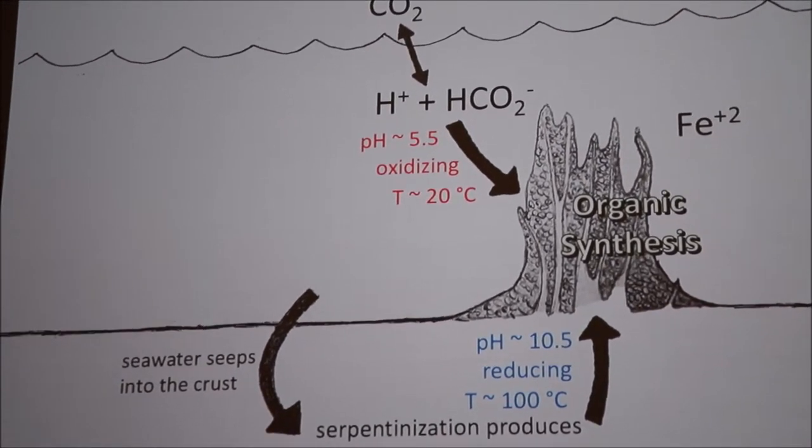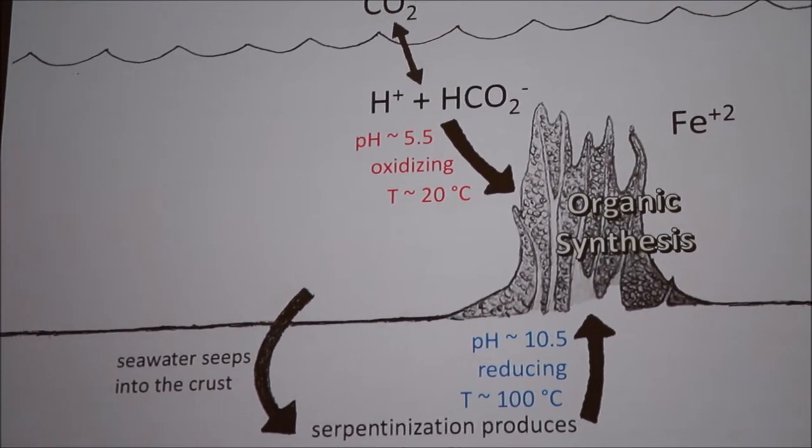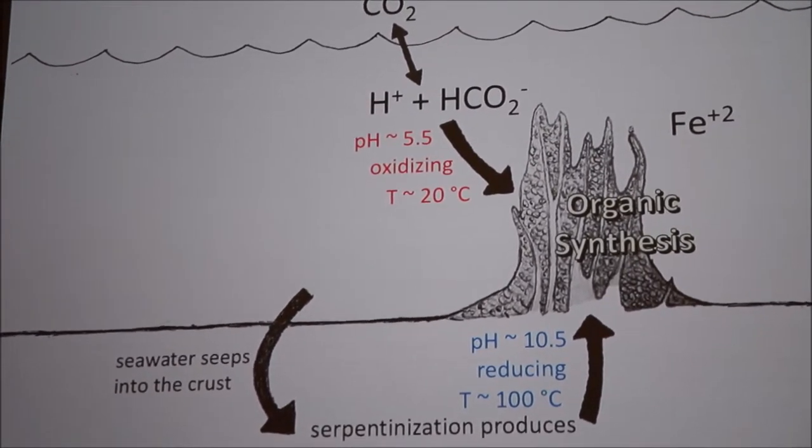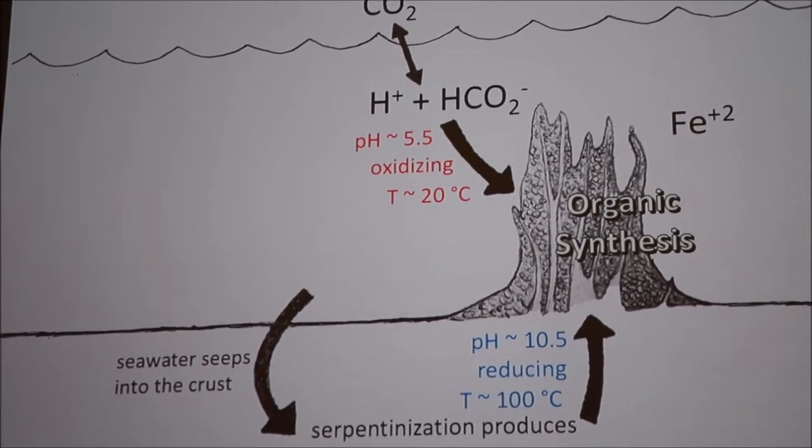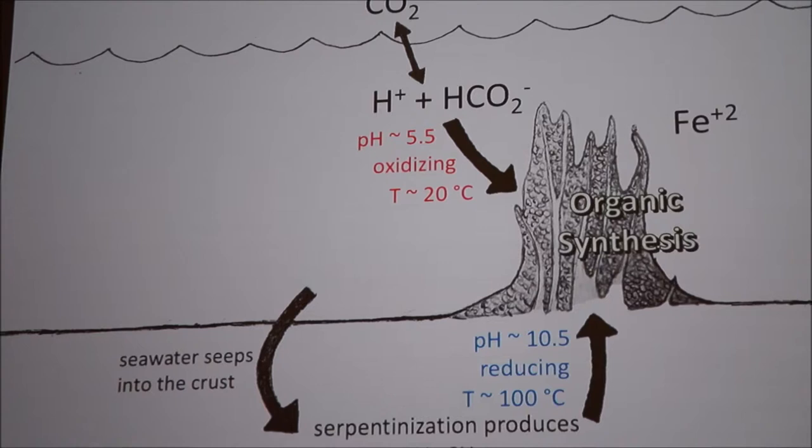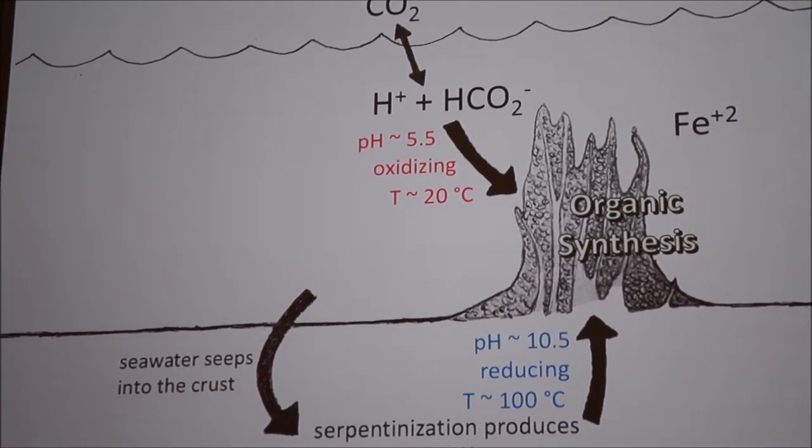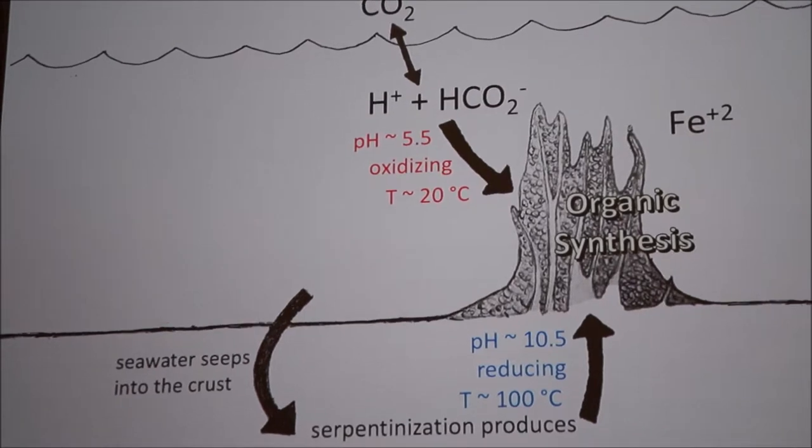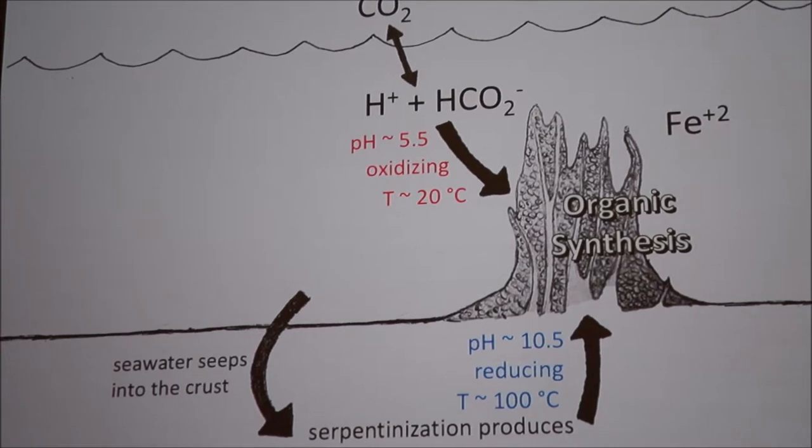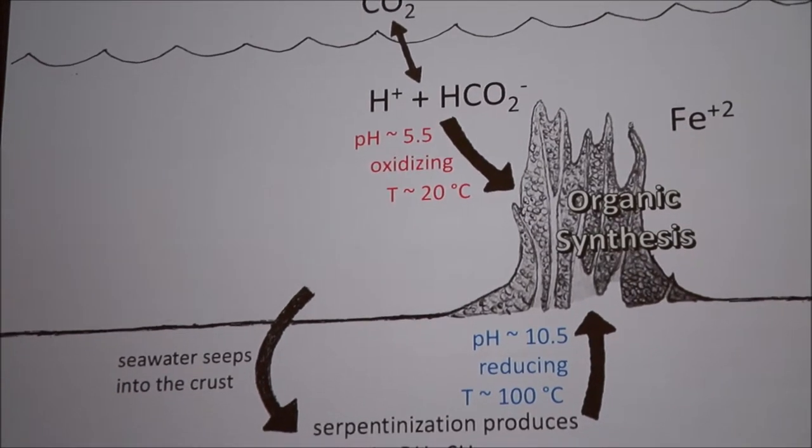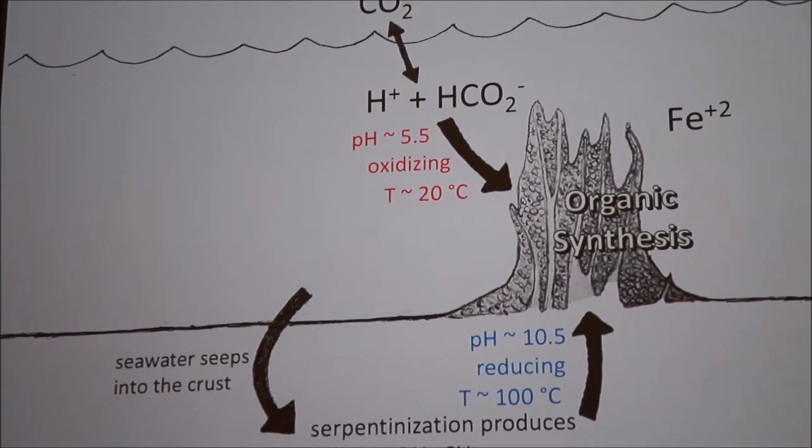When that gets convected back up into the ocean, it can react with dissolved cations in the seawater in order to produce a porous precipitate, which is our hydrothermal chimney. Notice that this hydrothermal chimney is right at the interface between an alkaline reducing fluid and an oxidizing acidic fluid. That's been proposed as an energy source for organic synthesis.